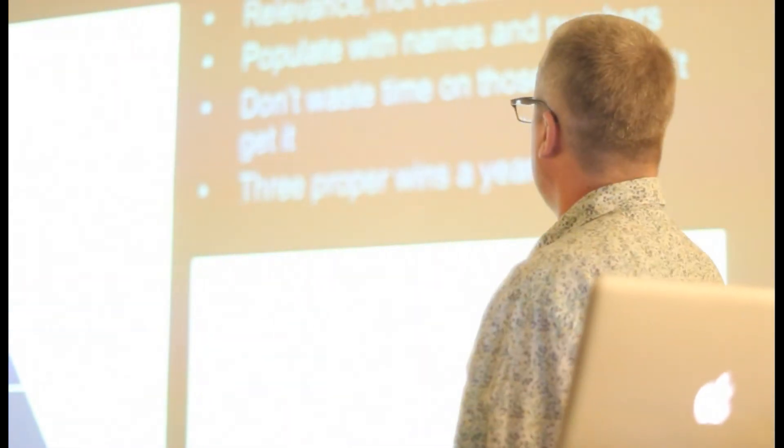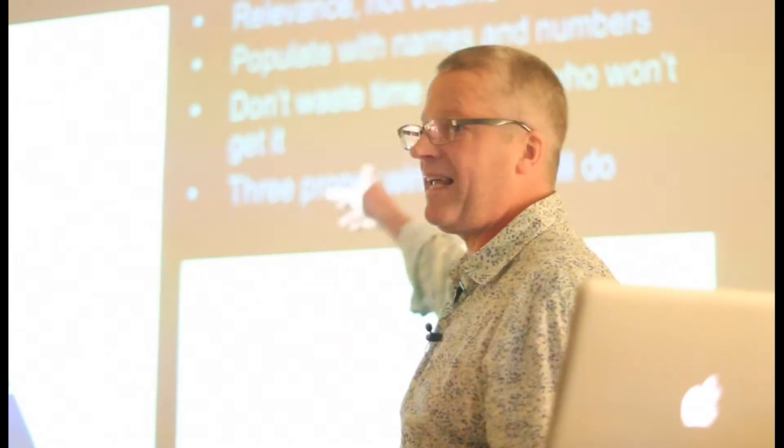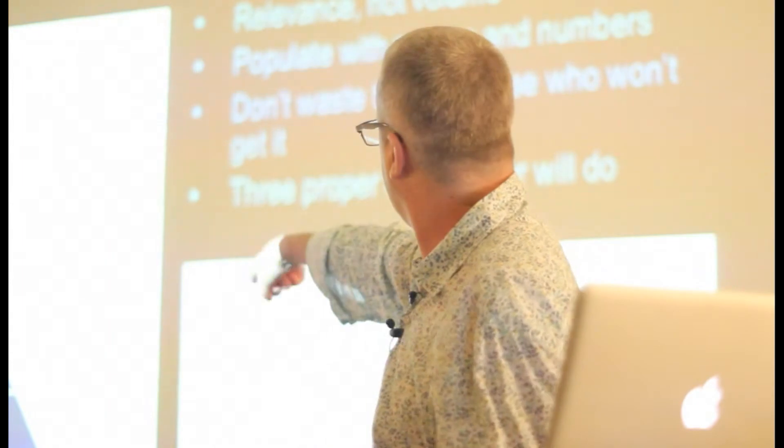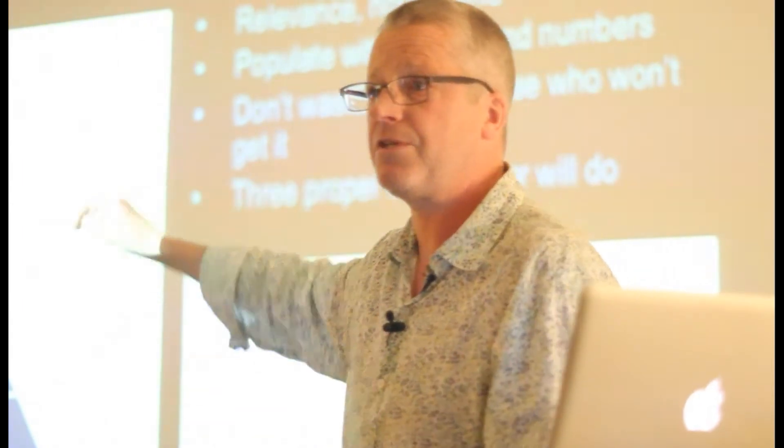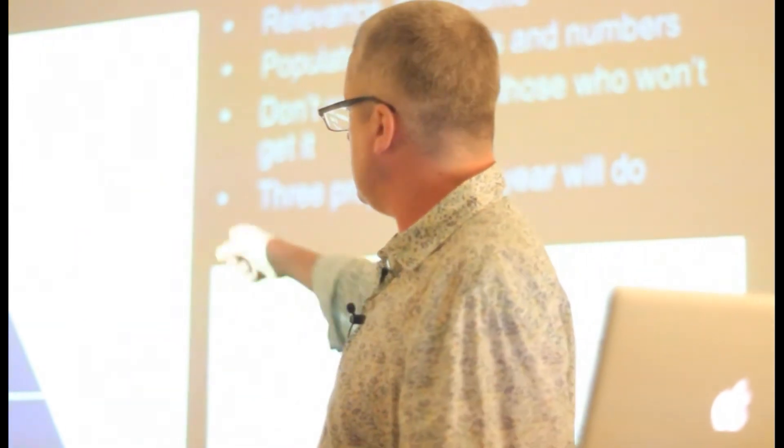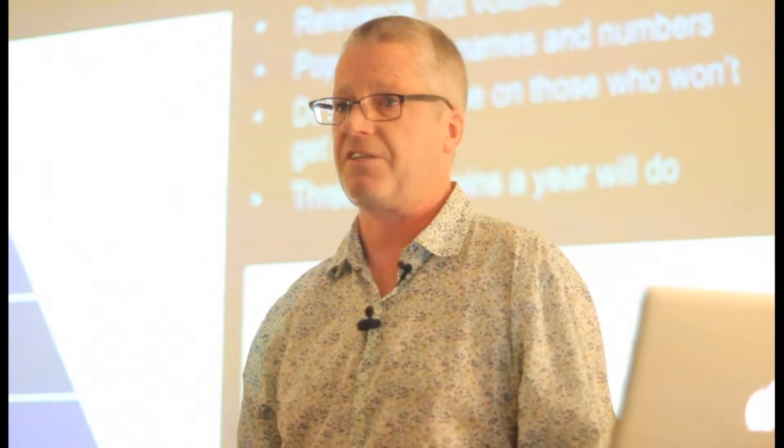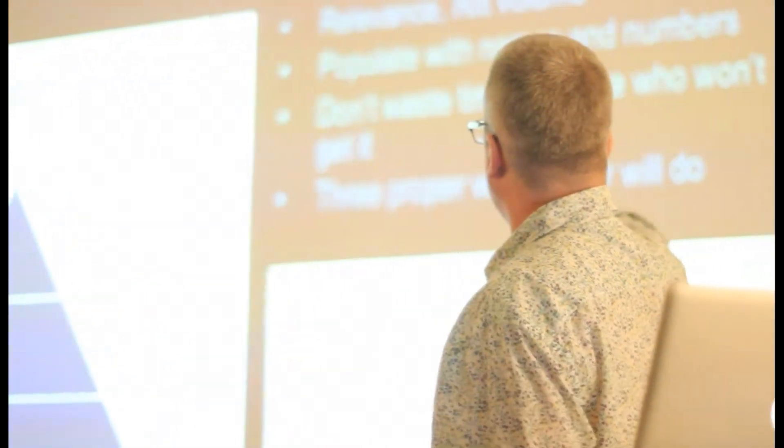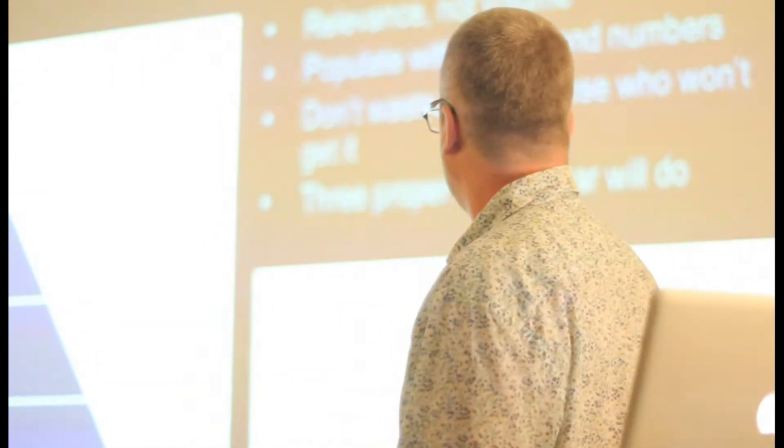It's simple - concentrate on relevance, not volume. Just populate the chart with names and numbers. At the top it will probably say 6 or 15 or something. Concentrate on them all year and don't waste time on the people who won't get it.